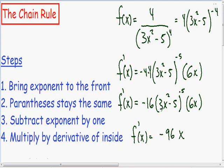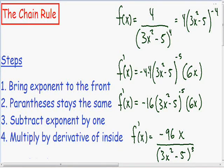And it is always improper to leave a negative exponent in your final answer. So instead of 3x squared minus 5 with a negative 5 exponent in the numerator, I am going to write it as a positive 5 exponent in our denominator. So I am just going to rewrite it: 3x squared minus 5 with a positive 5 exponent in the denominator. Now we have completely taken the derivative using the chain rule.